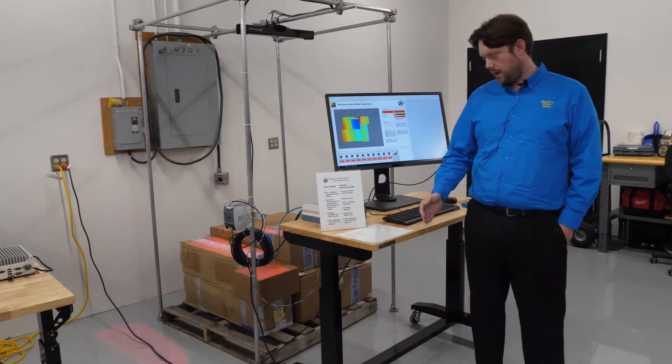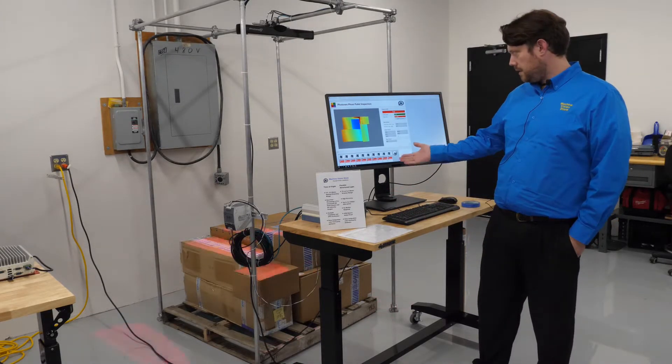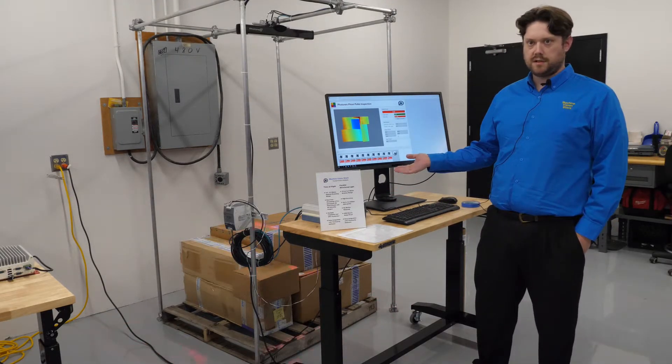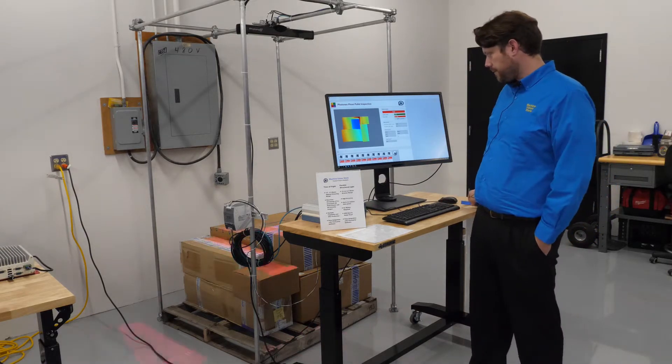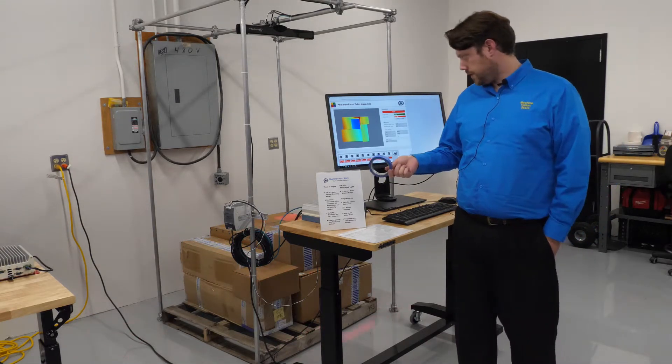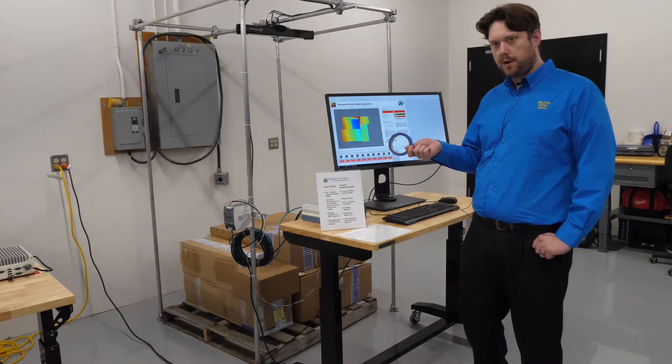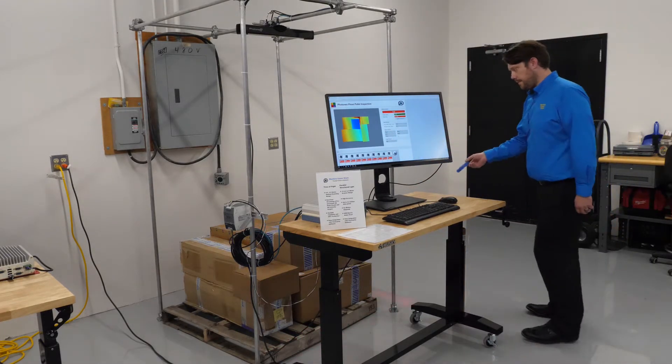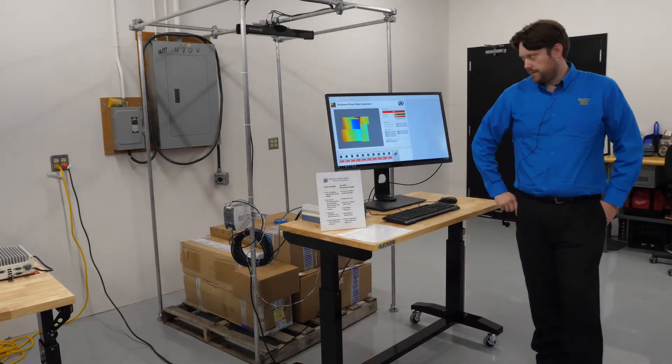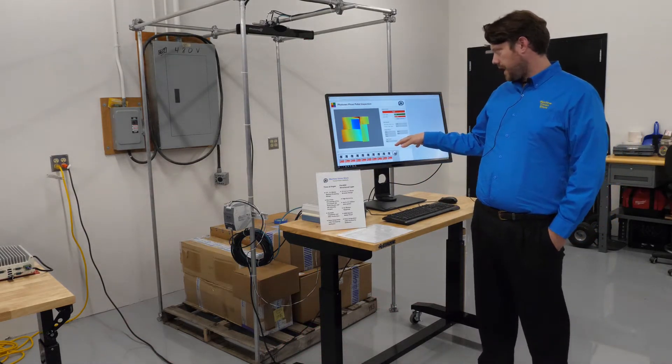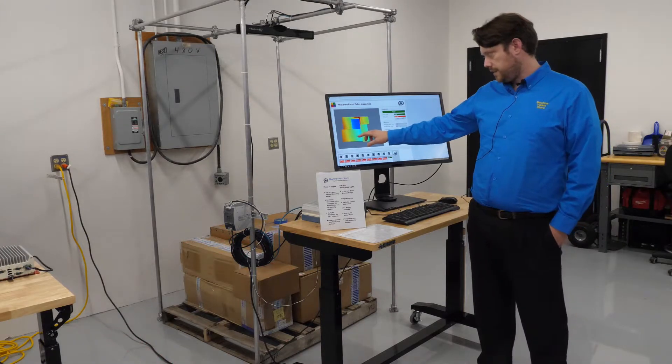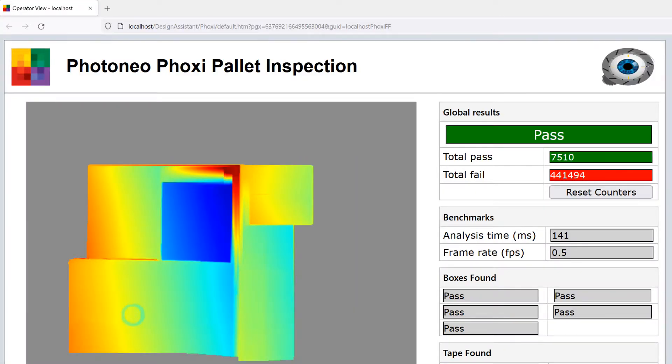So what can we do with that? An application example would be presence and absence of a detailed part. This is a box pallet inspection and we are missing some small detailed part. The scanner will do another scan here in one second and we find the small roll of tape that we are looking for.